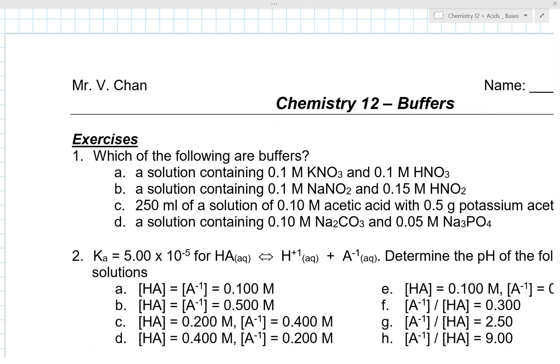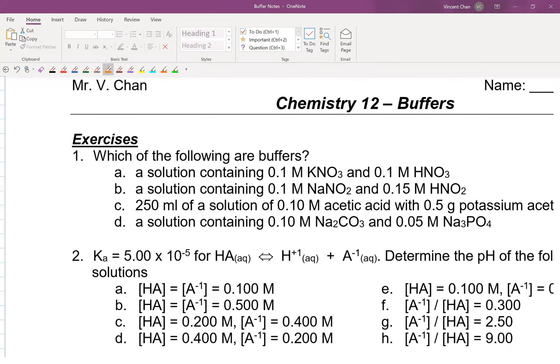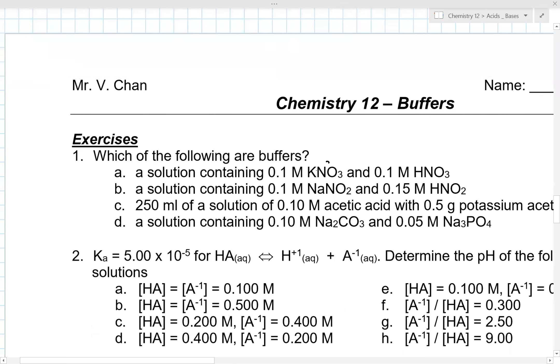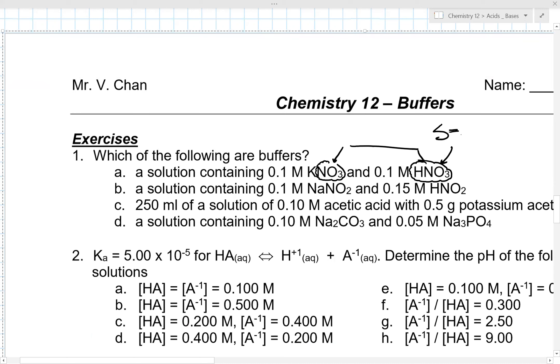And in this case, you might say, oh, Mr. Chan, I see NO3, right? I see NO3 here. And you have HNO3. They're conjugate pairs, yes. But in this particular case, what happens is the HNO3 is a strong acid. So it is unable to form a buffer situation.